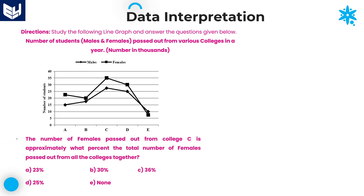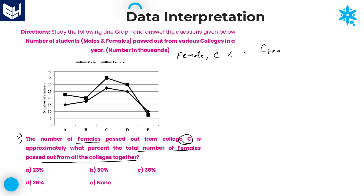The second question: the number of females who passed out from college C is approximately what percent of the total number of females passed out from all colleges? We need to calculate: females from college C divided by total females, multiplied by 100. College C females are 35,000 (square shape).